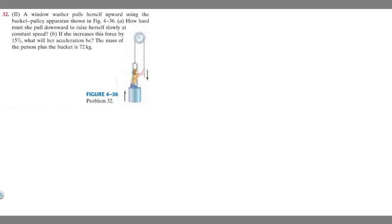This is going to be our image, and the first thing you want to do whenever you solve a problem like this is draw a free body diagram so we know what's going on exactly. We're going to do it based on the bucket — the person inside the bucket. This right here is going to be our bucket, and imagine we've got our person in it. So, what are the different forces acting on this person?